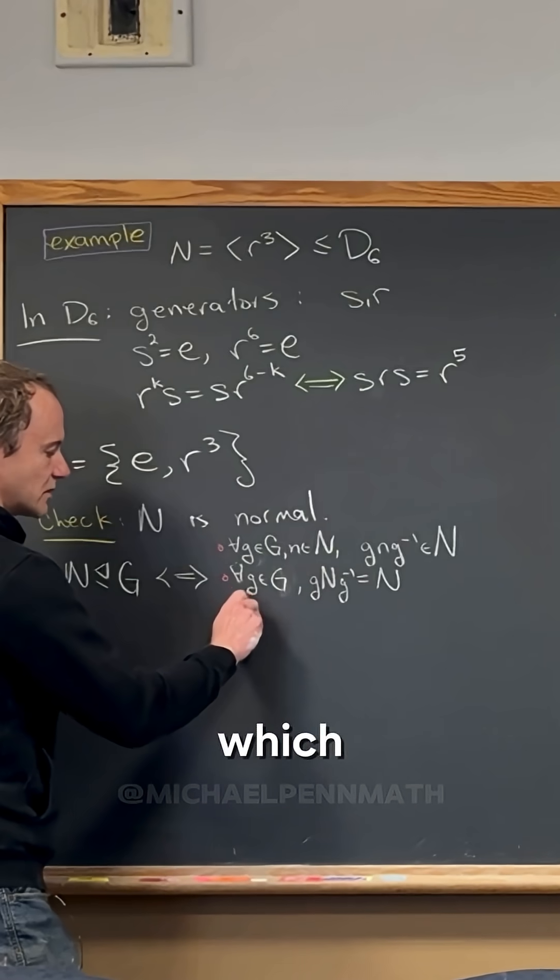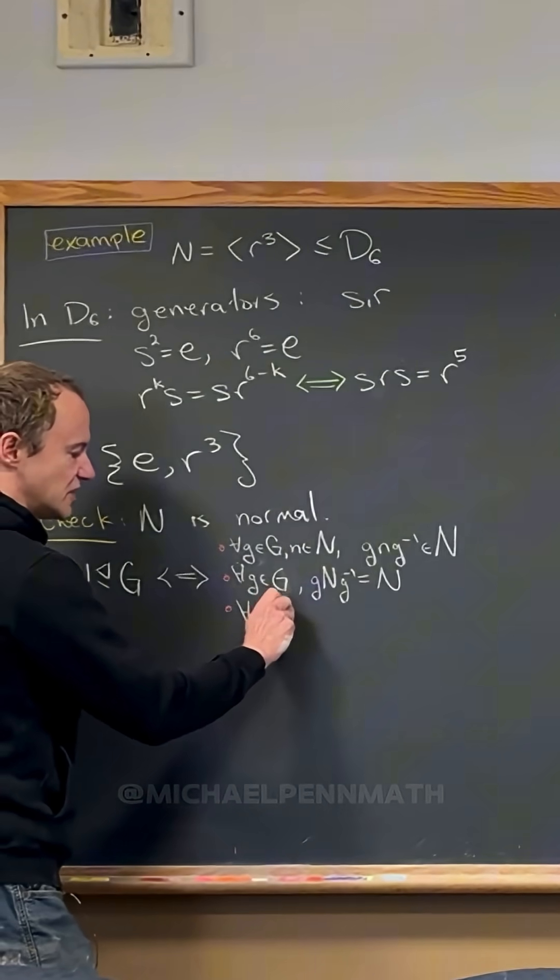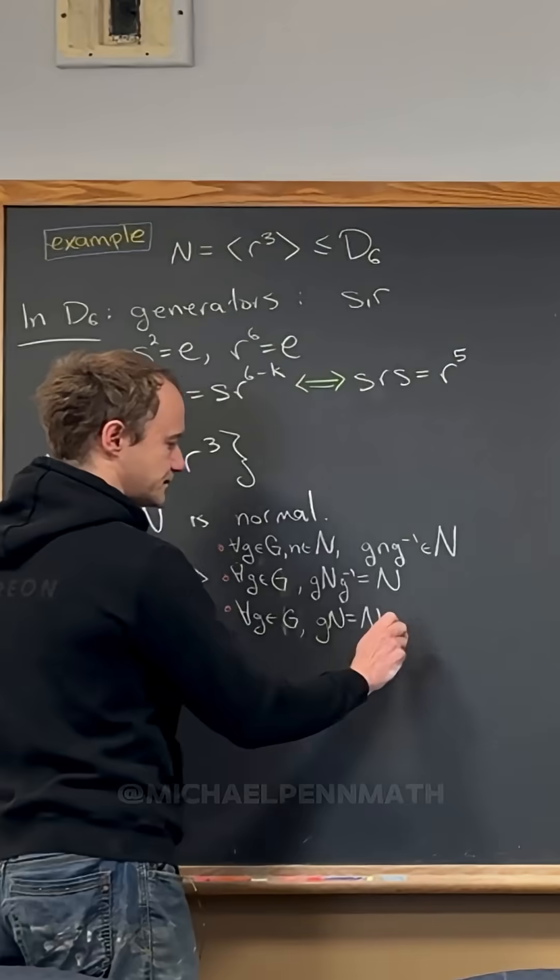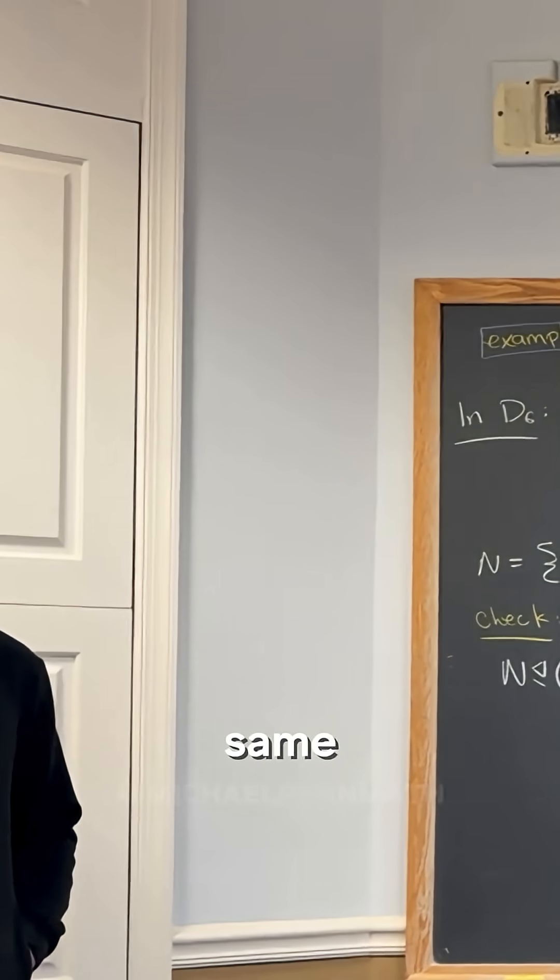And then I guess there's one more, which is for all g in G, gN equals Ng, right? So all those three are the same.